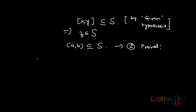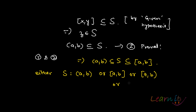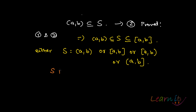Combining statements one and two, we have that the open interval (A, B) is contained in S, which is contained in the closed interval [A, B]. So S is an interval — it can be the open interval (A,B), the closed interval [A,B], or half-open variants. Whatever the case, S is an interval [A, B].